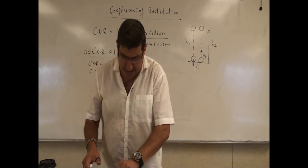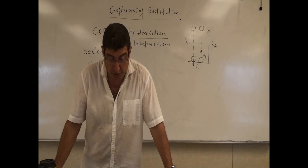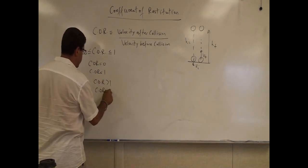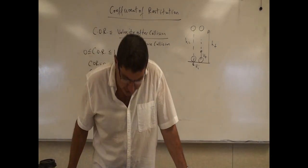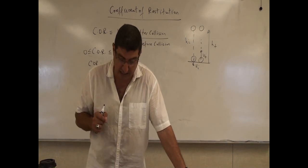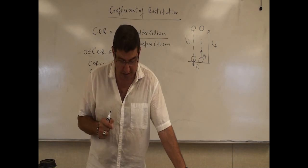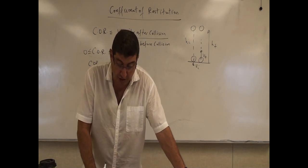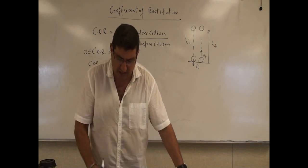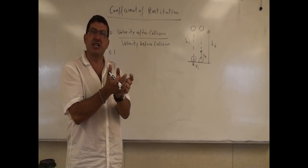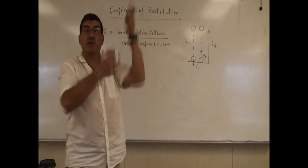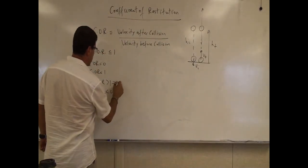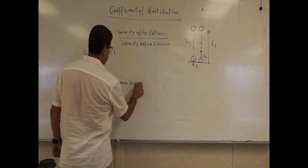On Wikipedia it says you could even find objects with a coefficient of restitution greater than one or less than zero. Greater than one would represent a collision in which energy is released — for example, nitrocellulose billiard balls can literally explode at the point of impact. Some recent articles have described super-elastic collisions where the ball has elastic energy stored in it, and upon colliding with the ground it releases that energy and goes higher than the initial height.